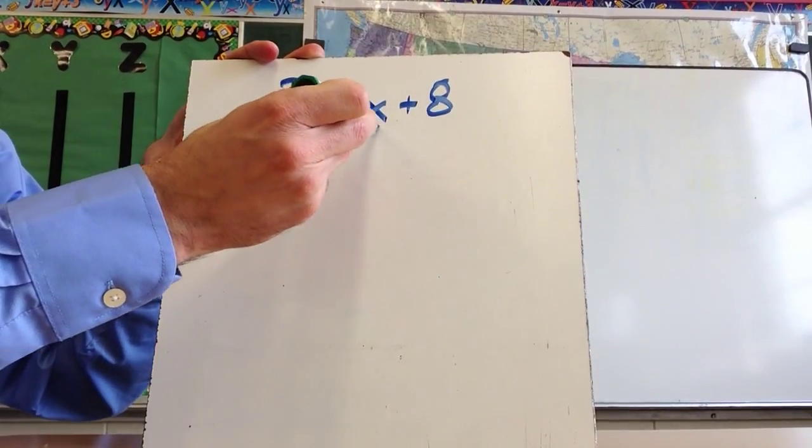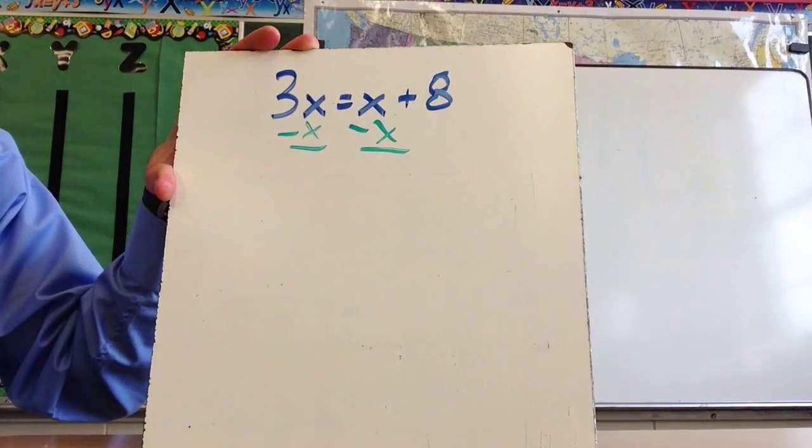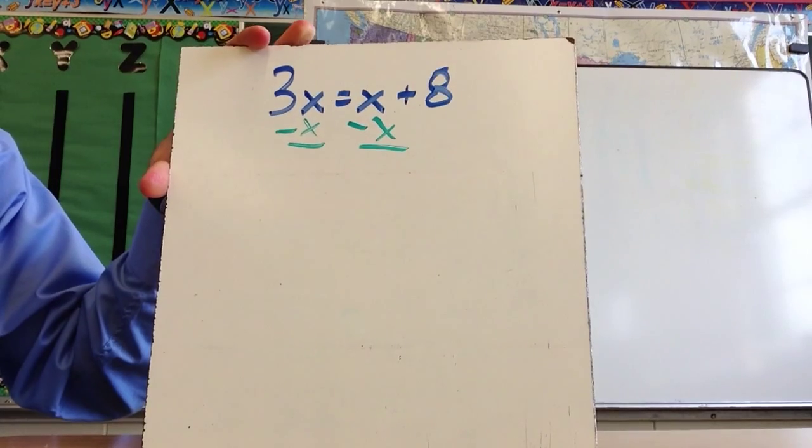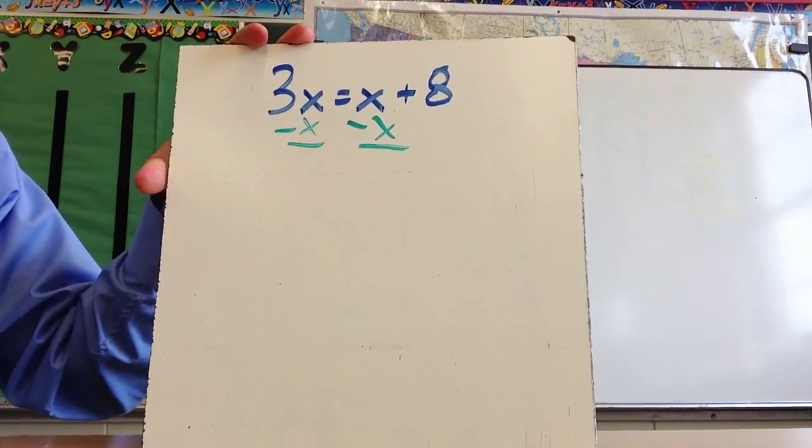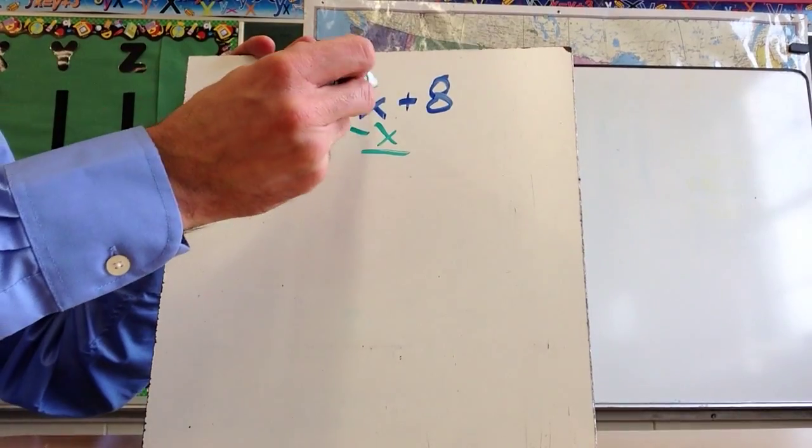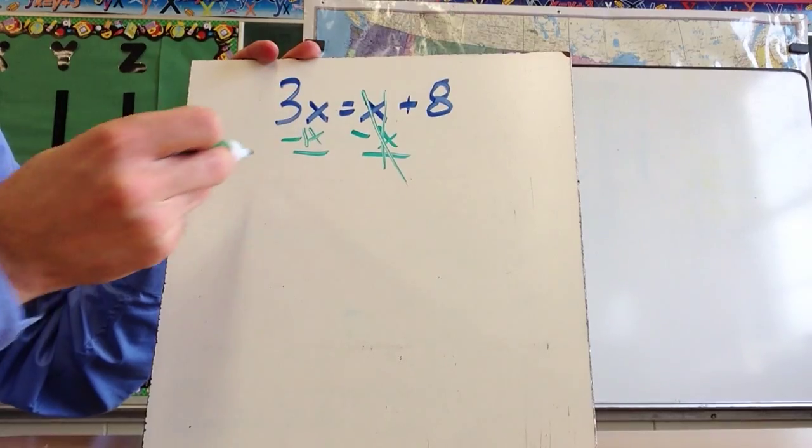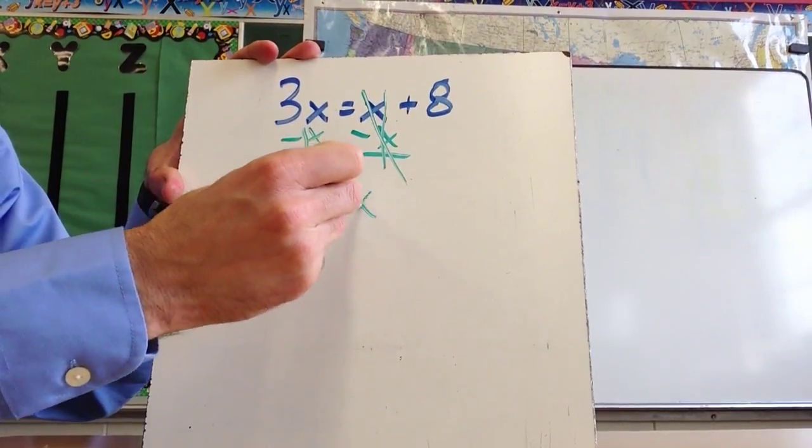So in order to do that, what I'm going to do is subtract x from both sides. Now when I do that, x minus x, just as 7 minus 7 is 0, 20 minus 20 is 0, 1 half minus 1 half is 0, x minus x is also 0. So this will cancel itself out, and I'd be left with, remember that it's still 1, so 3x minus 1x is the same as, or equals, 2x.